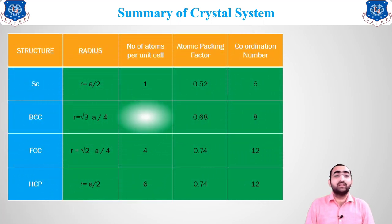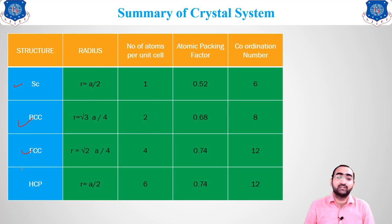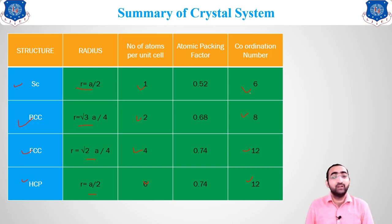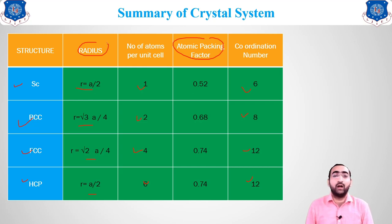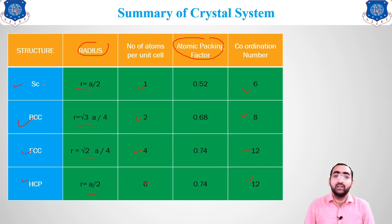To summarize the crystal systems: SC has 1 atom per unit cell and coordination number 6; BCC has 2 atoms and coordination number 8; FCC has 4 atoms and coordination number 12; HCP also has 6 atoms and coordination number 12. The atomic packing factor and radius derivations for all four structures will be covered in the next lecture, followed by a discussion of defects occurring inside unit cells.